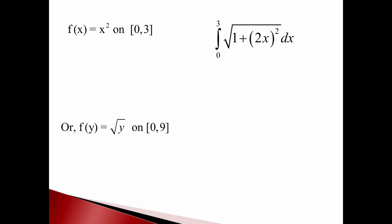Instead of having y equals x squared, I could write this the other way, x equals square root of y. Now my integral will turn from zero to three to zero to nine because I'm going on the y-axis.